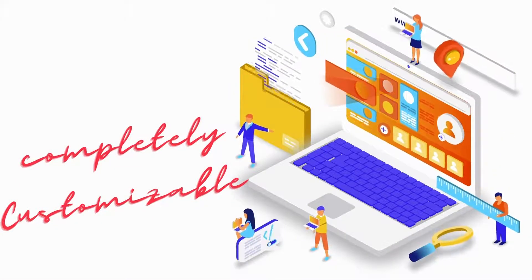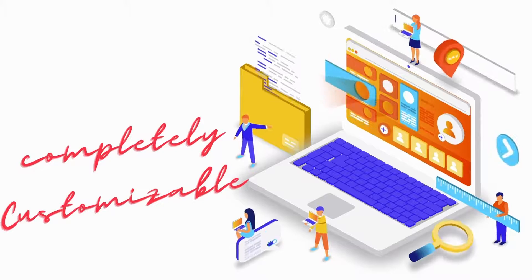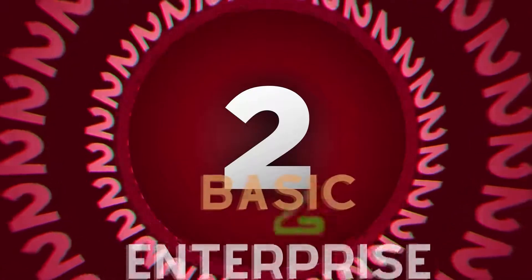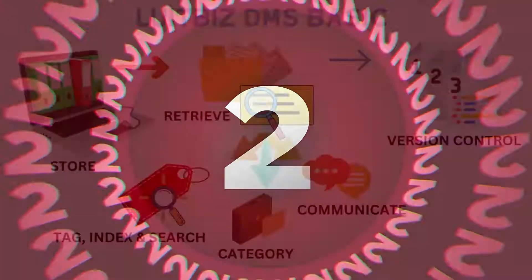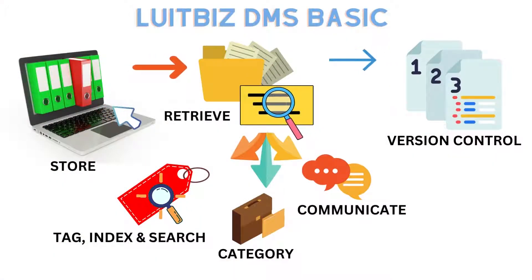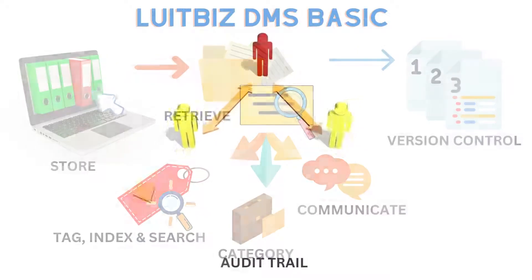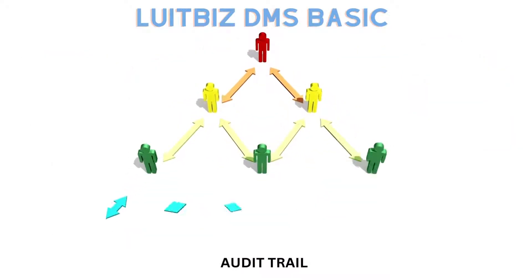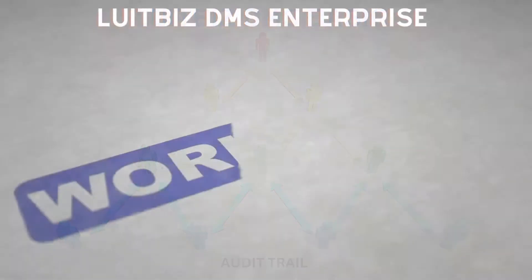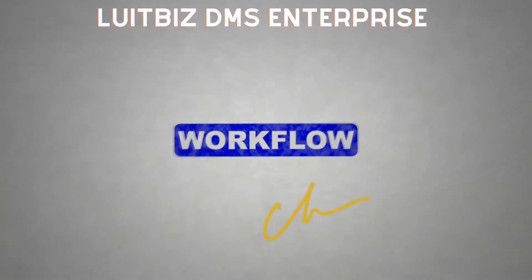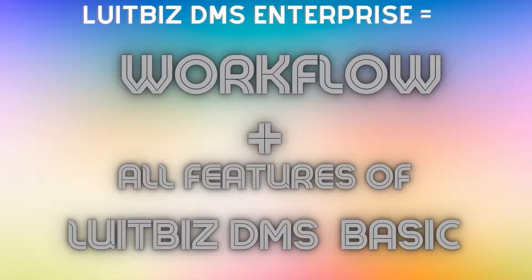LookBizDMS is completely customizable and can be customized to meet the unique needs of our customers. LookBizDMS comes in two flavors: basic and enterprise. The basic version allows you to store and retrieve documents, manage different versions, perform document tagging, document categories and communication, and provides a complete audit trail of all documents. The enterprise version supports document workflow with electronic signature in addition to all the basic features.